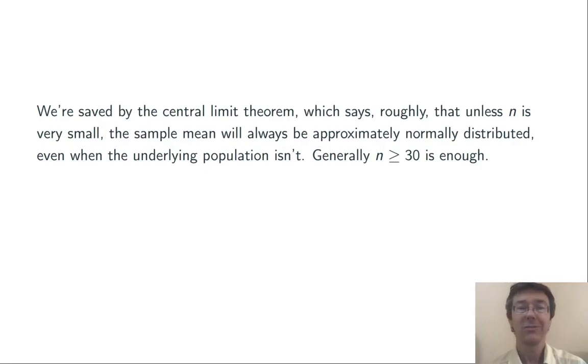The central limit theorem says, roughly, that as long as n is somewhat large, generally n greater than or equal to 30 is enough, then the sampling distribution of the sample mean is always going to be approximately normally distributed, even if the population that you're sampling from is not.